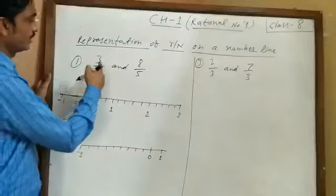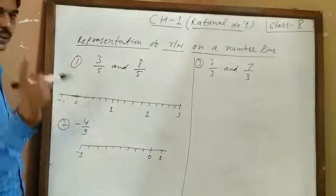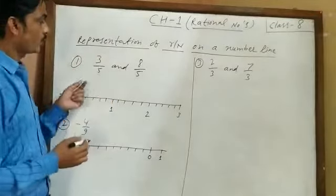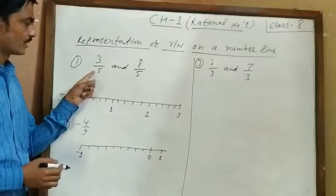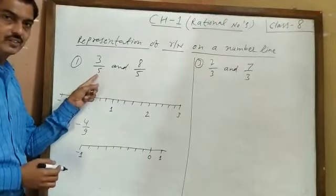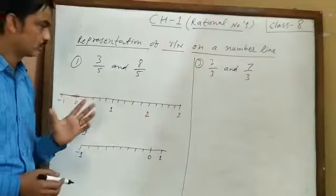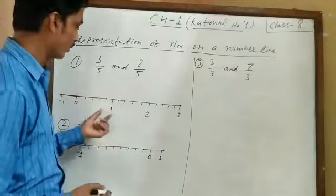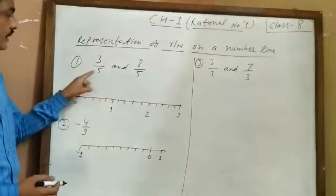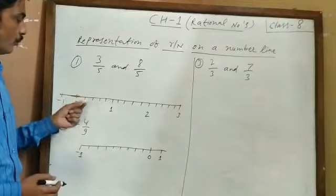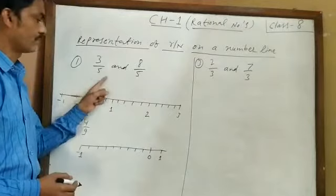First, we represent 3 upon 5 and 8 upon 5 on a number line. Whenever you represent any rational number on a number line, please see the denominator. What is the denominator? It is 5. You all know how we draw a number line from earlier classes. If the denominator is 5, we divide each unit between 1 and 2 into 5 equal parts.